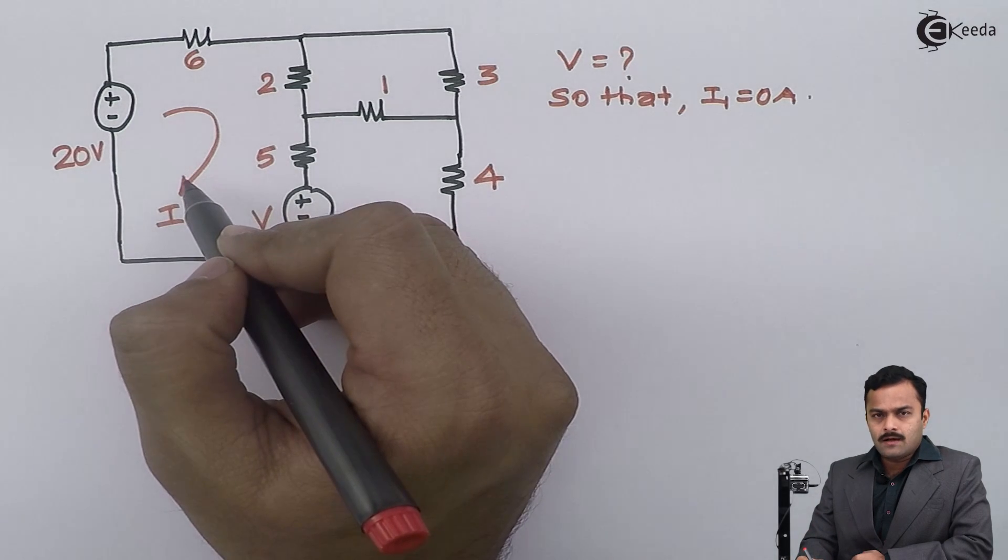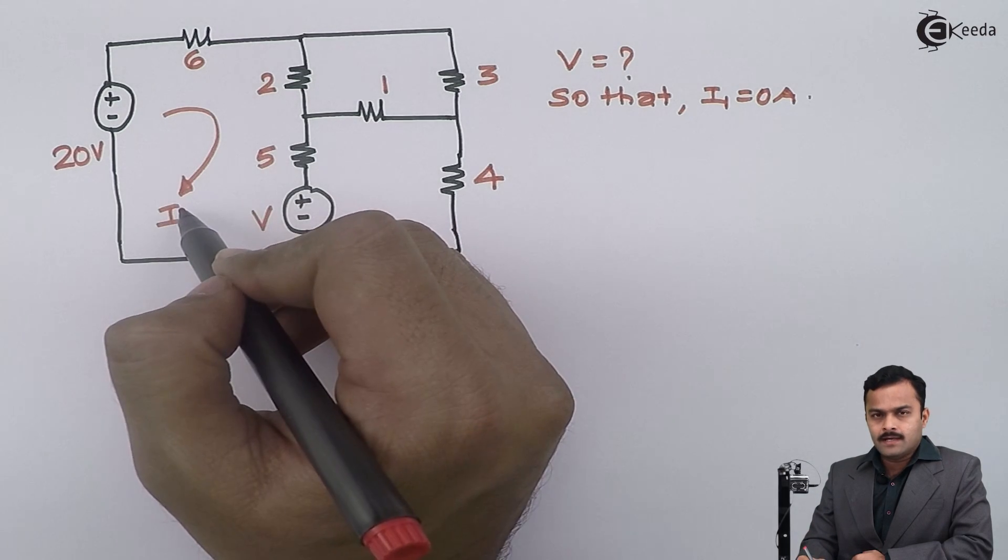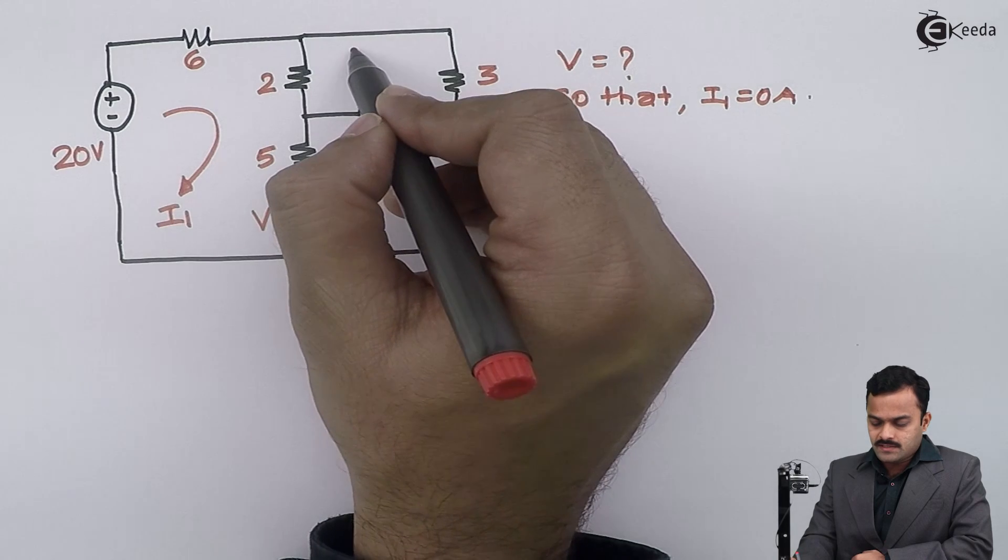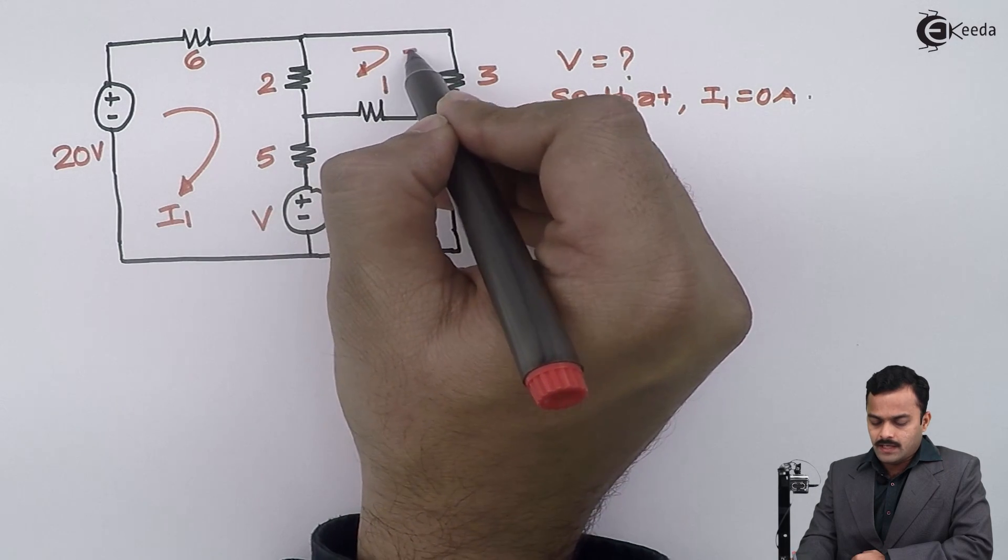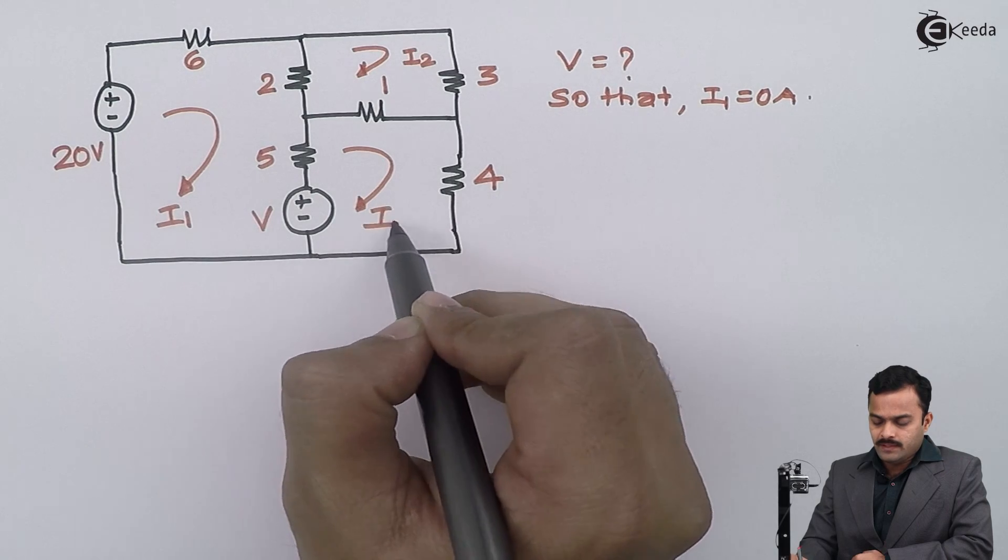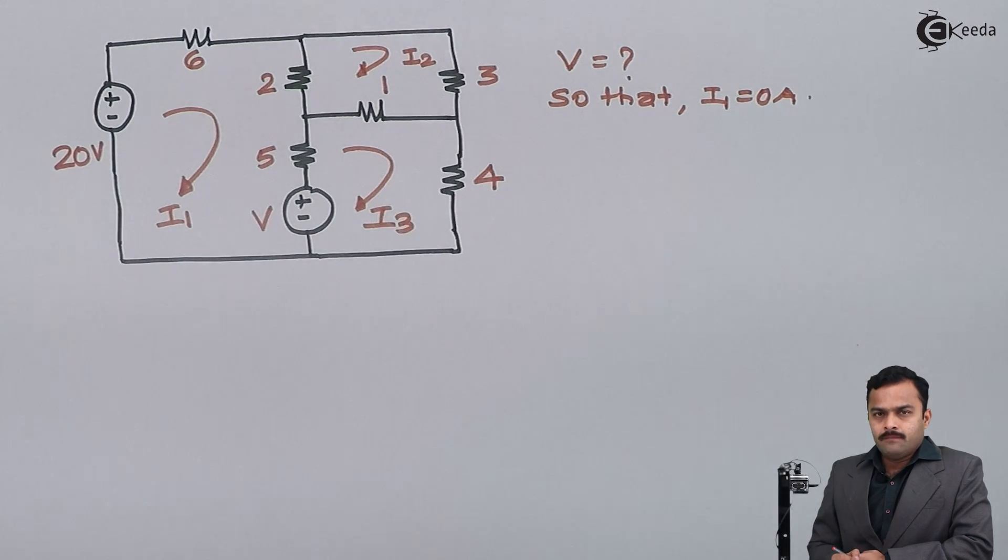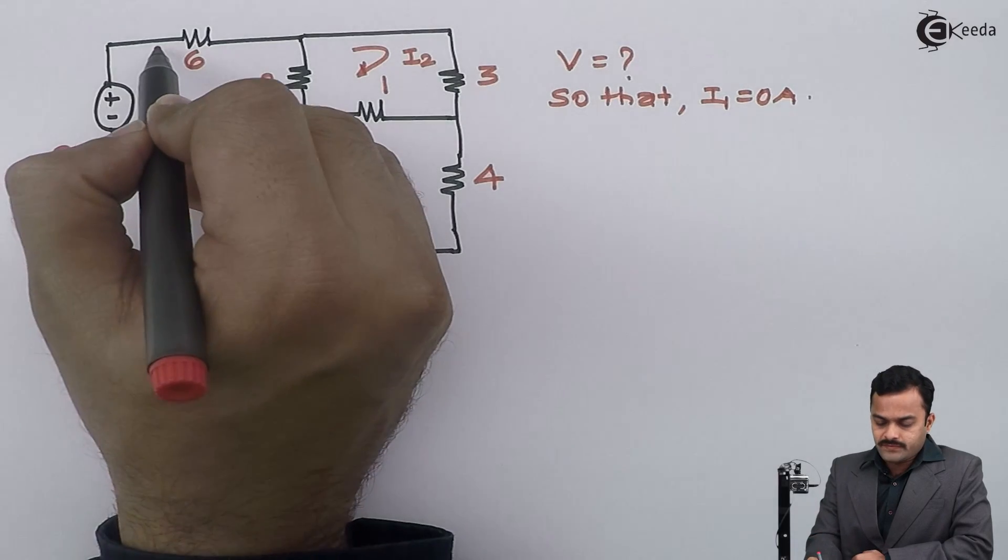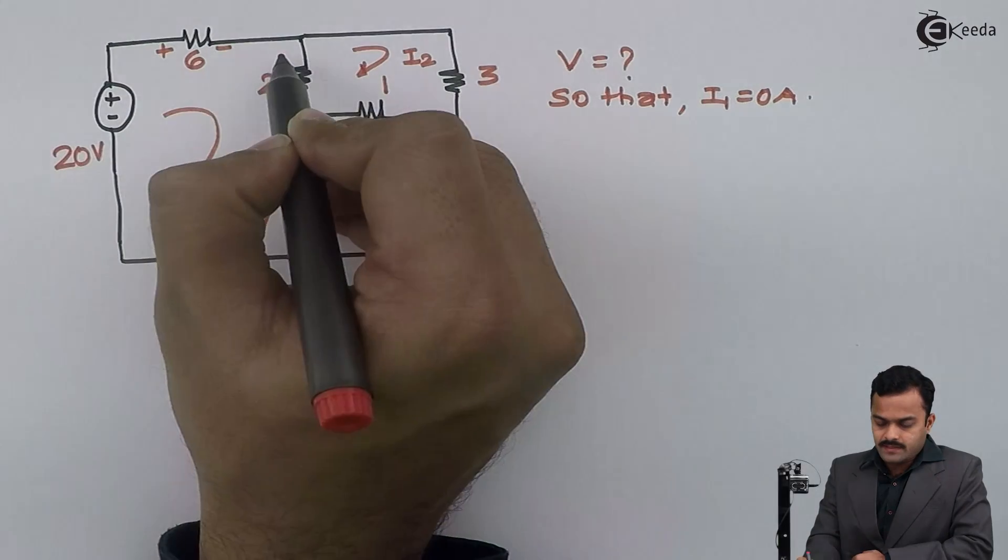So I will consider loop number 1 like this and loop current I1. Same way this will be I2 and this will be I3. Based on the direction of currents, the drops will be like this: plus minus.